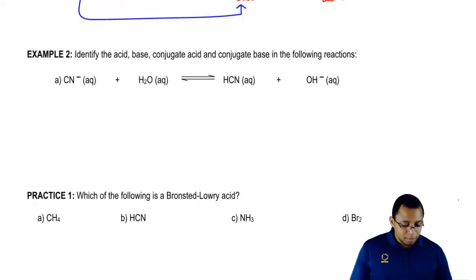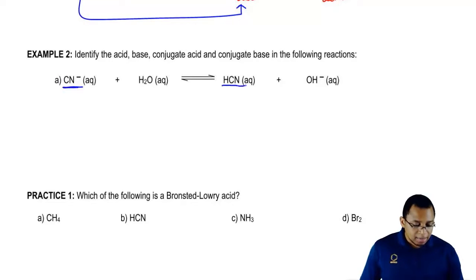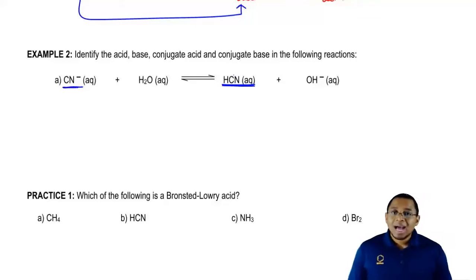Now that we've done that one, let's take a look at example two. In example two, we have to do the same thing once again. So here, we have CN negative, but all of a sudden it becomes HCN. How did that happen?